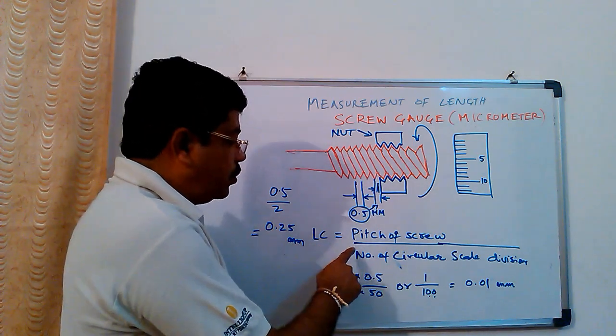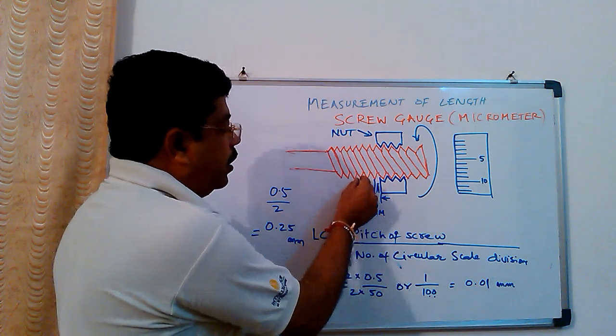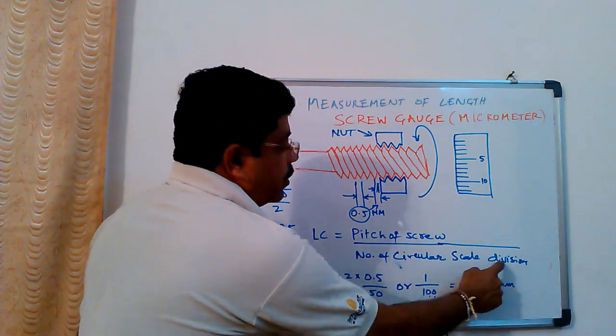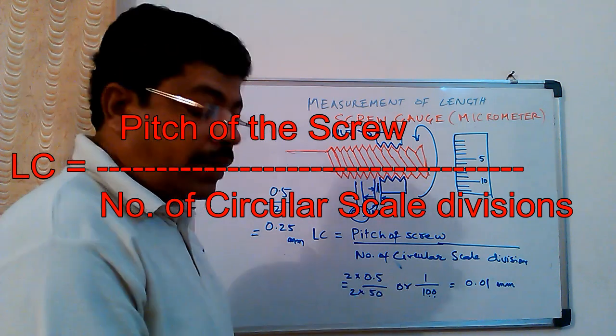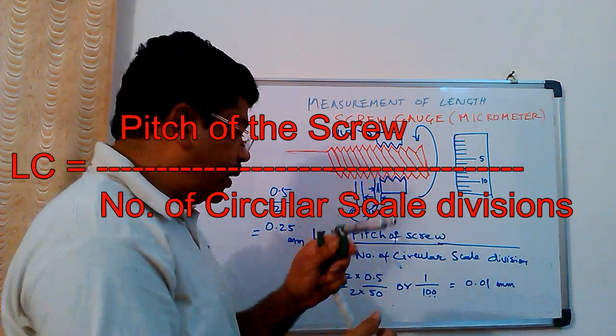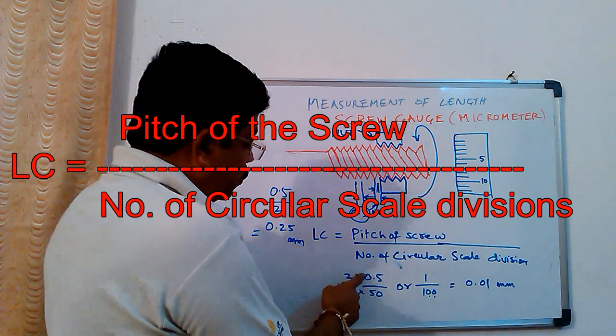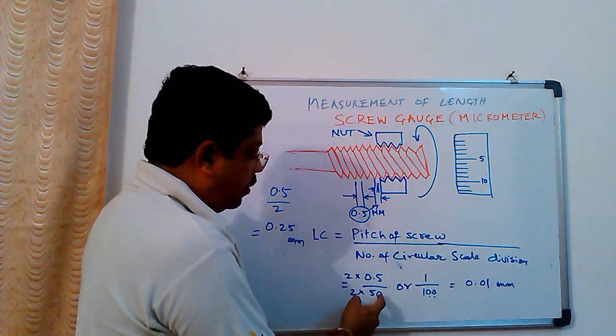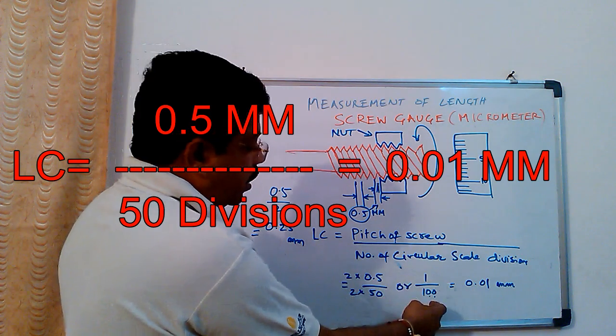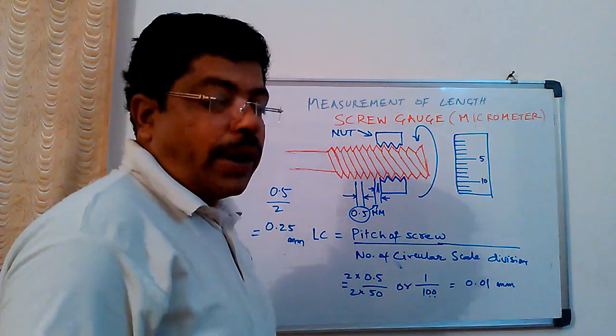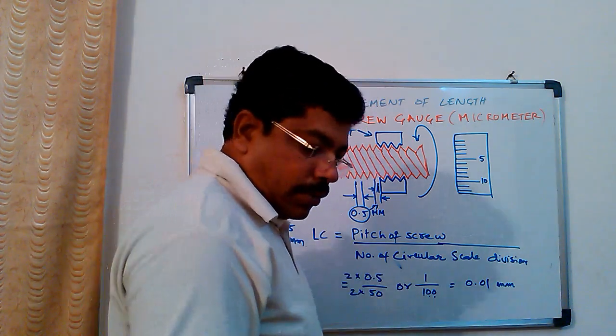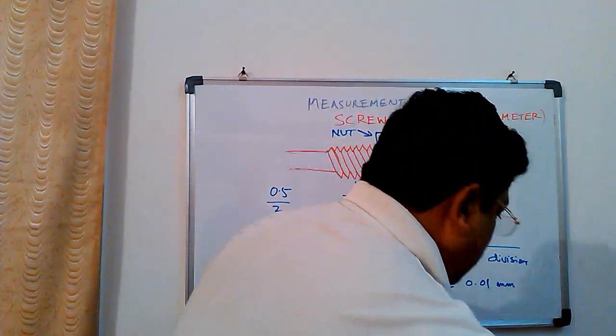Here the least count is equal to pitch of the screw - which is the distance between one thread to another thread, which is 0.5 mm - divided by the number of circular scale divisions. The circular scale is this one, and importantly it is divided into 50 divisions in this case. It can be divided into 100 also. So 0.5 by 50 is the least count. And I multiplied by 2 by 2, so it comes to 1 by 100, which comes to 0.01 mm least count. So now we will measure some object and let us see how it works out.